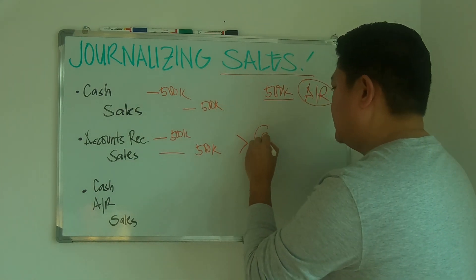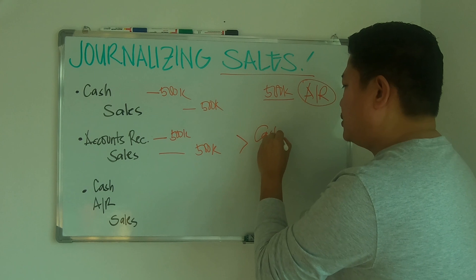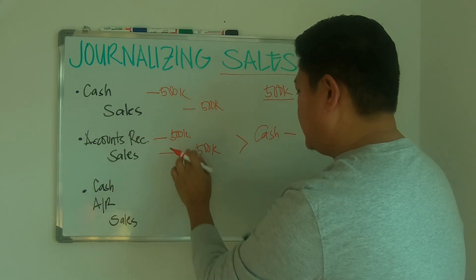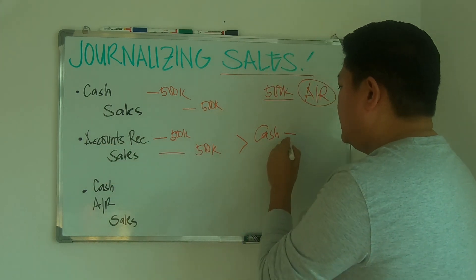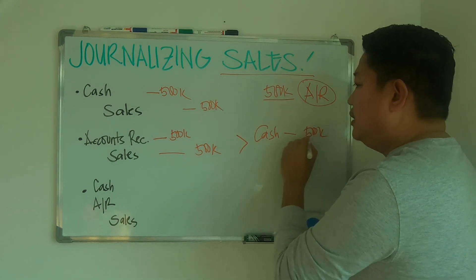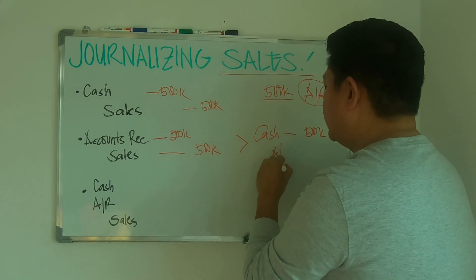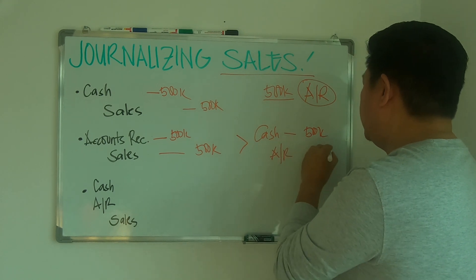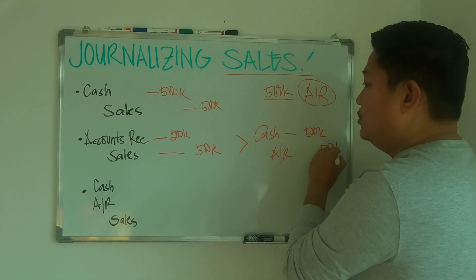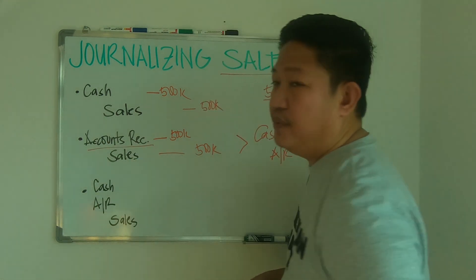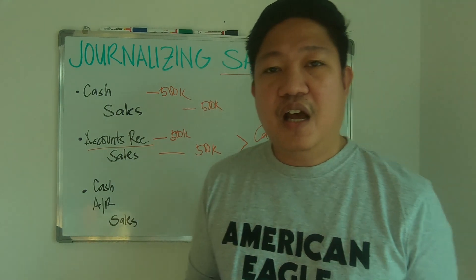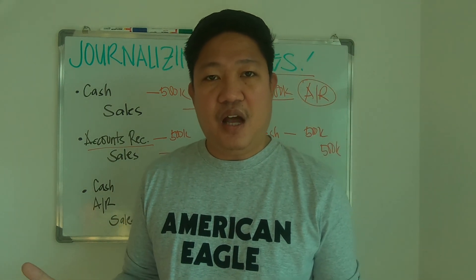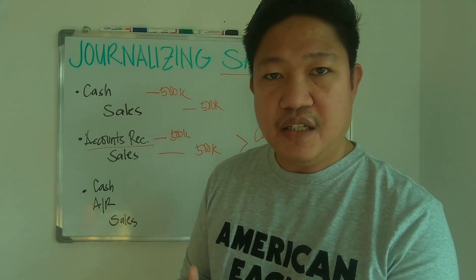Now at the time of collection, you have to debit cash because now you're receiving the payment for the accounts receivable — for the sales you made in this transaction — and credit accounts receivable of 500,000 to offset it. However, sometimes you give 50% cash and 50% receivable.